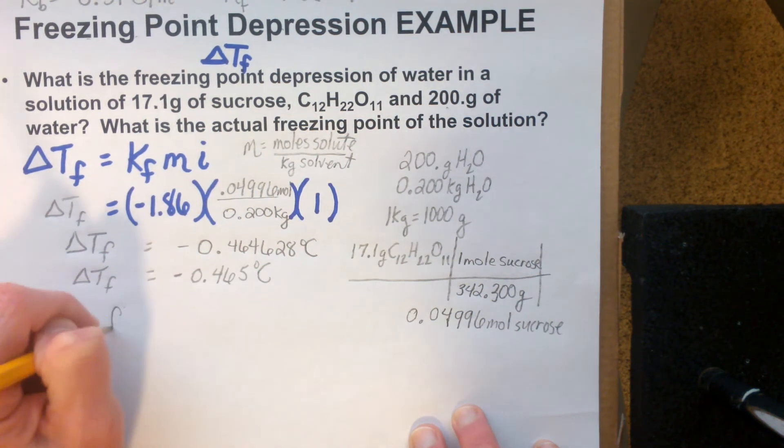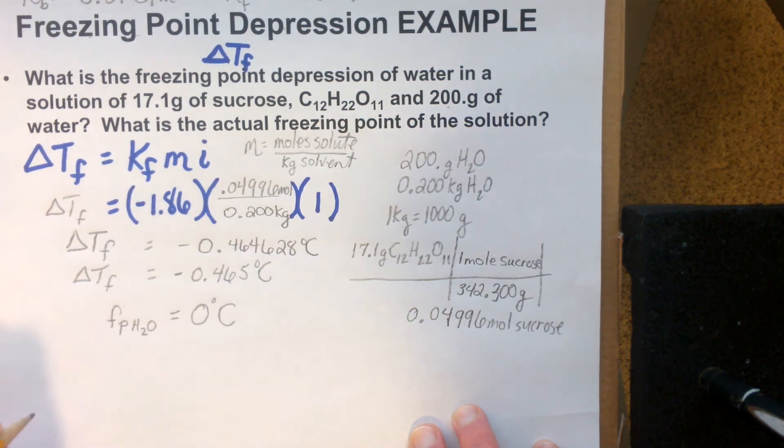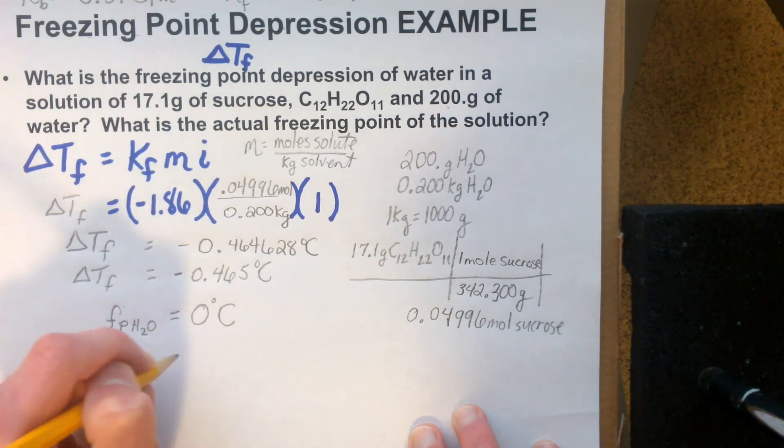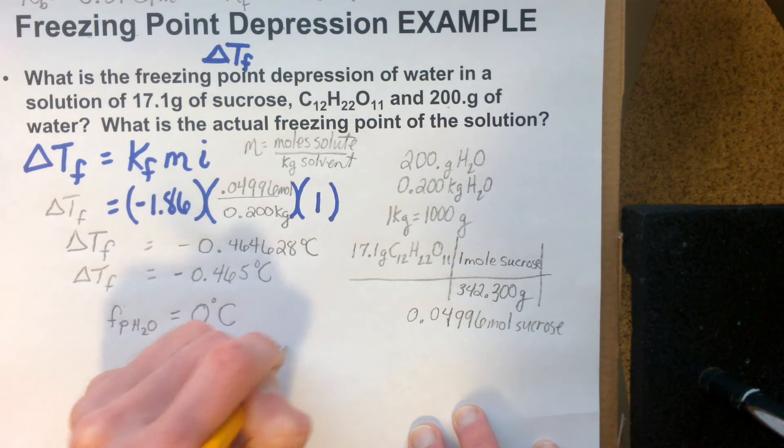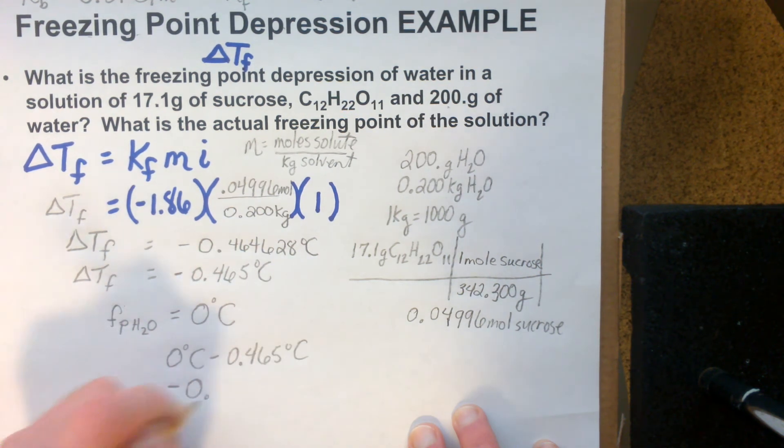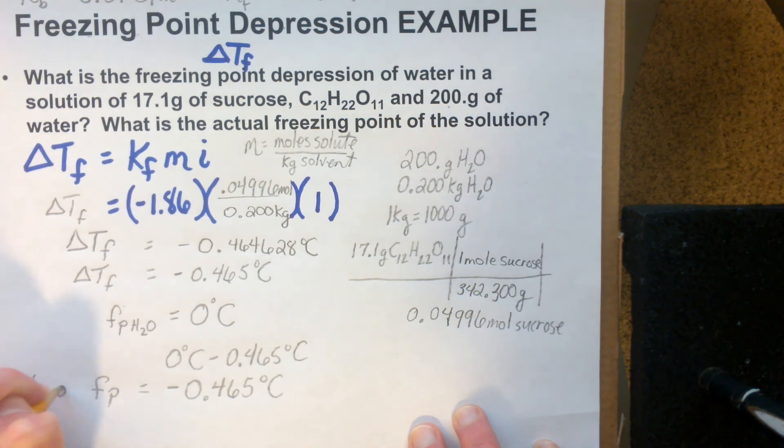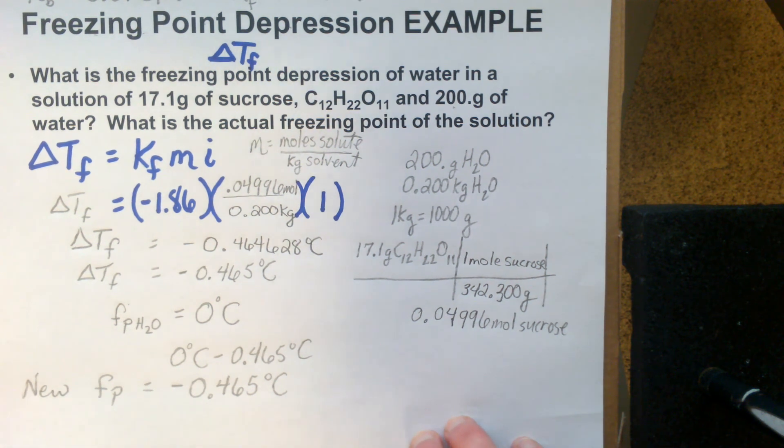The freezing point of pure water is 0 degrees Celsius. Now, with the sucrose dissolved, it is 0.465 degrees lower. So it's 0 degrees Celsius minus 0.465 degrees Celsius. Now the new freezing point is negative 0.465 degrees Celsius. That is the new freezing point of our sugar water solution.